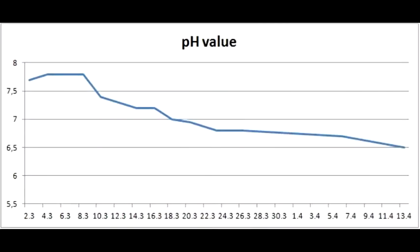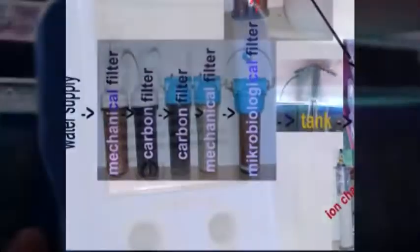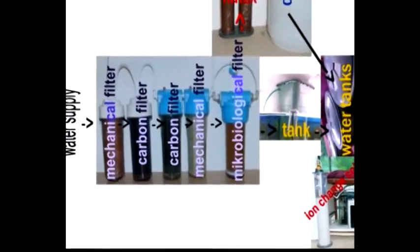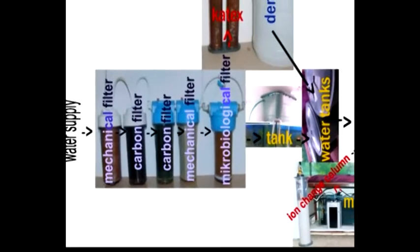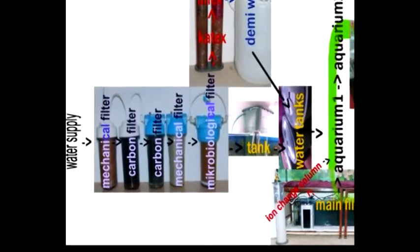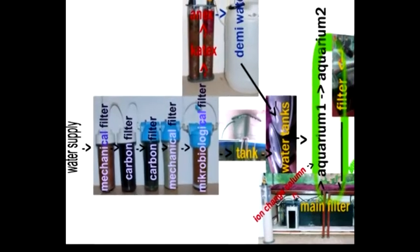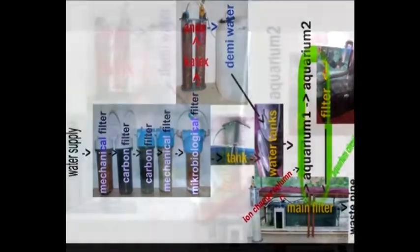After addition of sulfuric acid to the input aquarium water for more than one month, we reached the target aquarium level of pH. Water flows through a few filters in the tank and also through a cation exchange column. Then the water is mixed with the water from the tank, and water in the aquarium circulation is added from tanks after defecation.